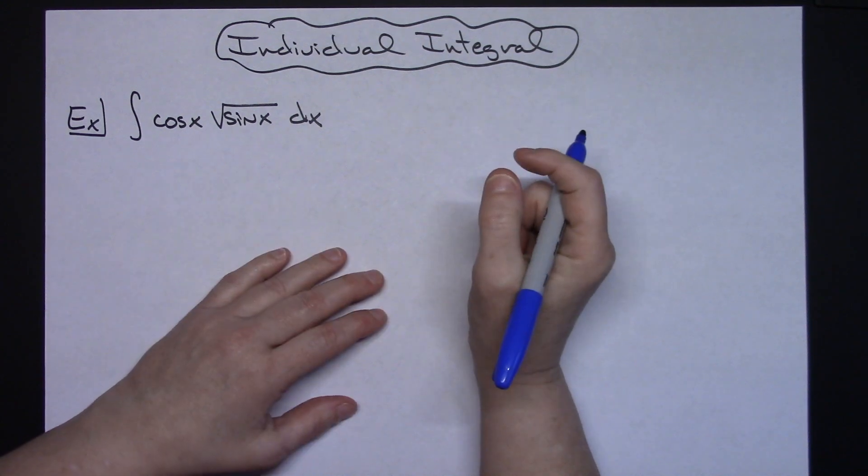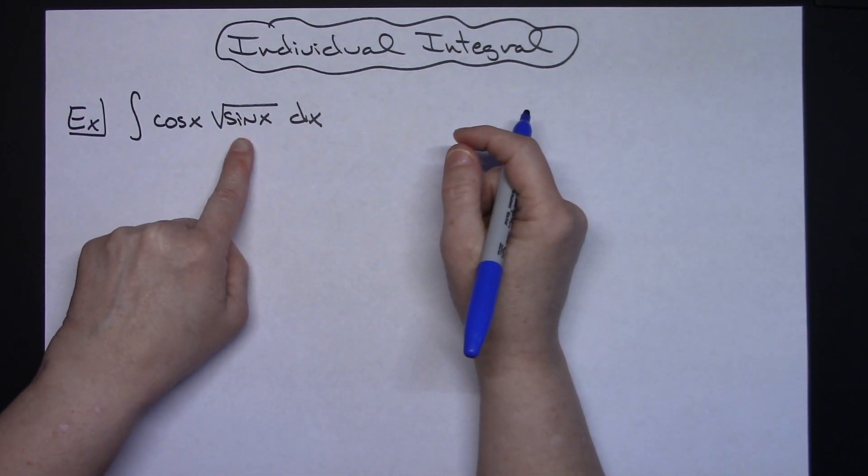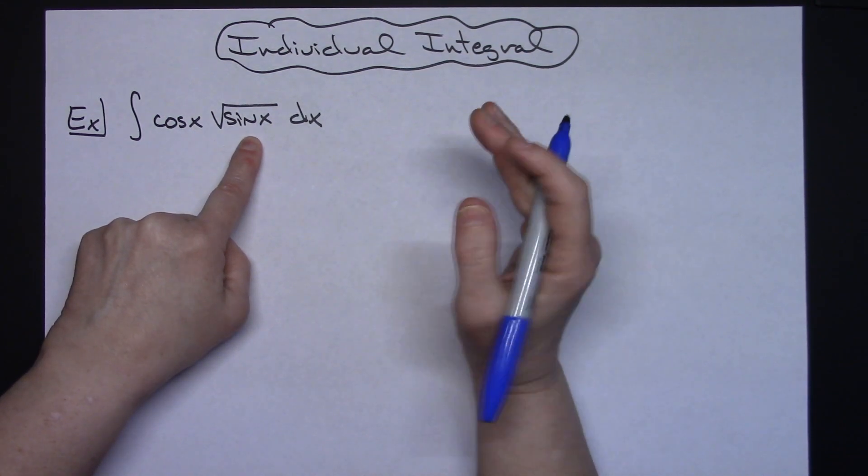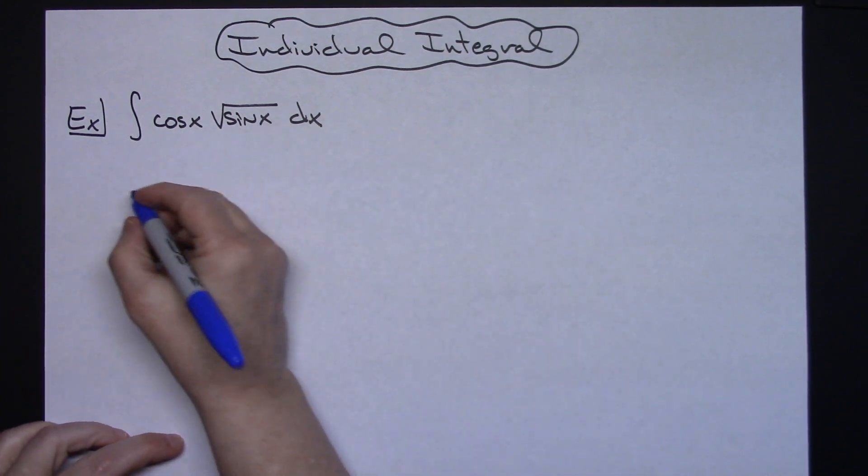Now for the most part this is going to be a straightforward u substitution because you can see that if I look at that inside function sine x and I take the derivative of that I am going to get cosine which means things will cross out nicely.